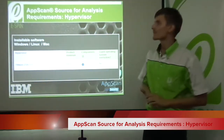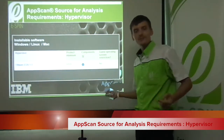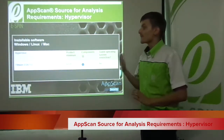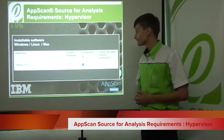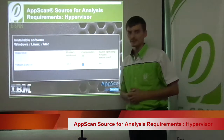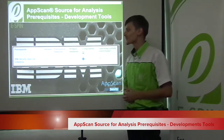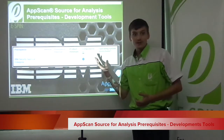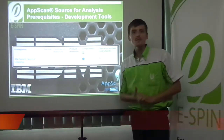The hypervisor requirements: supported install on Windows, Linux, and Macintosh. The supported hypervisor is VMware ESXi 5.0. The product minimum version is 9.0.3. AppScan Source for Analysis pre-requisites include IBM Security AppScan at version 9.0.3.